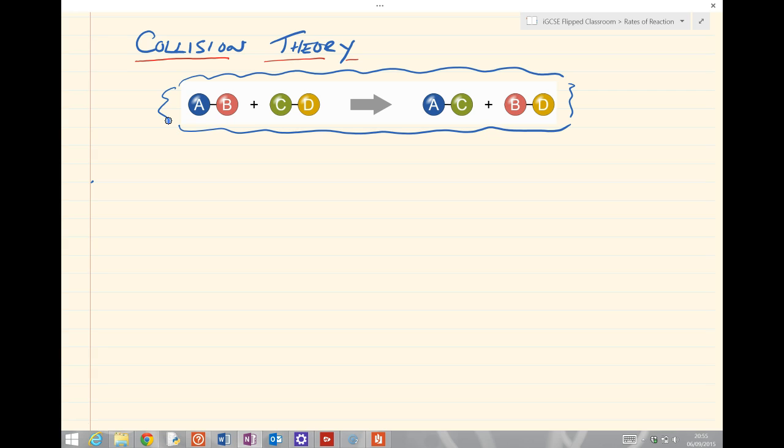In order for this reaction to actually happen, a few things have got to occur. Firstly, AB has actually got to collide with CD. And secondly, it has to collide with enough energy.